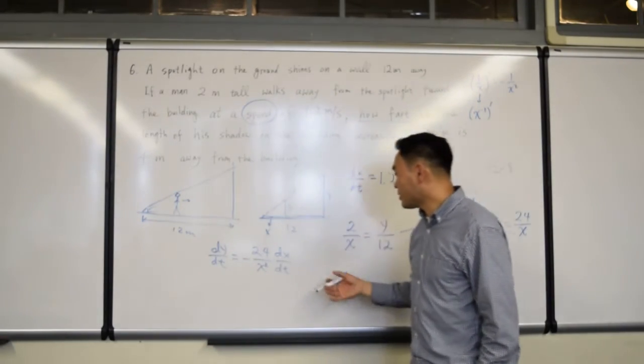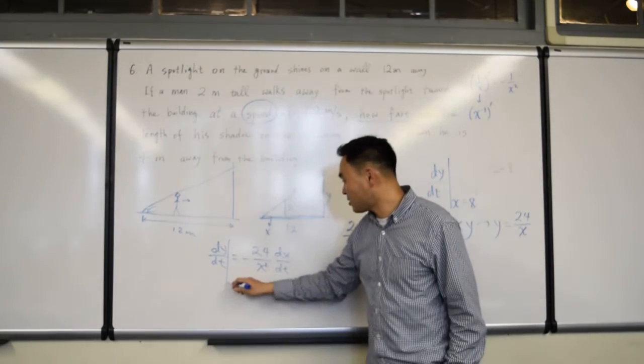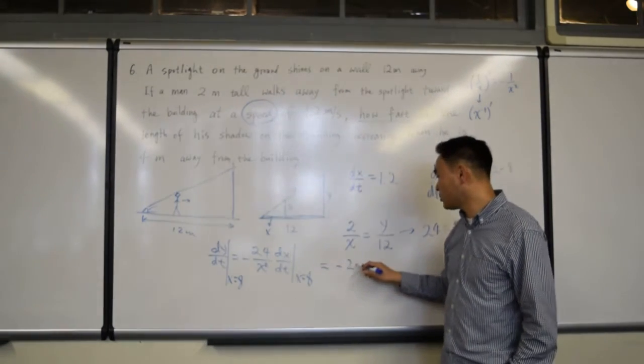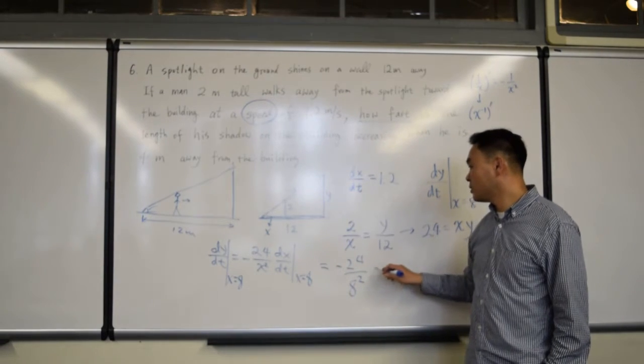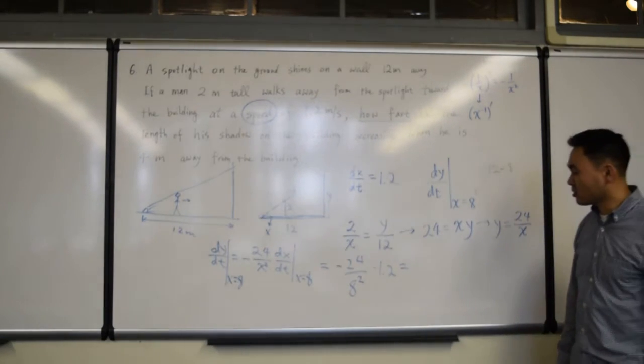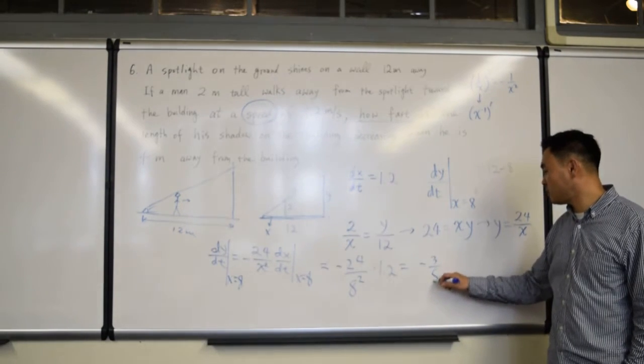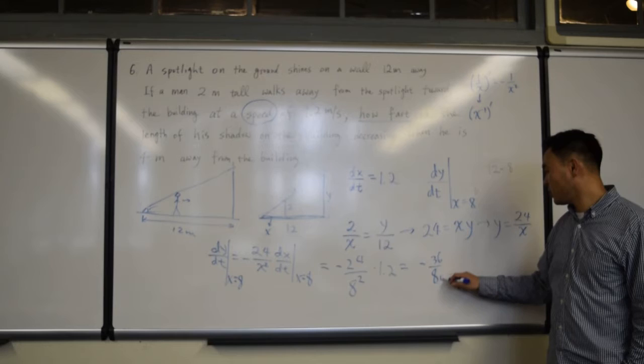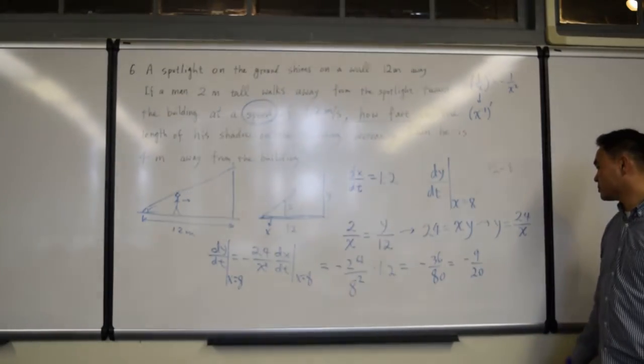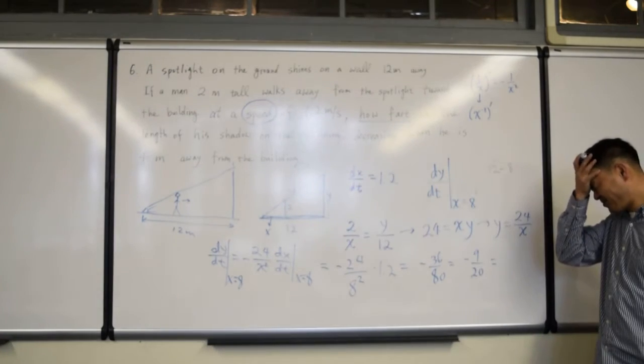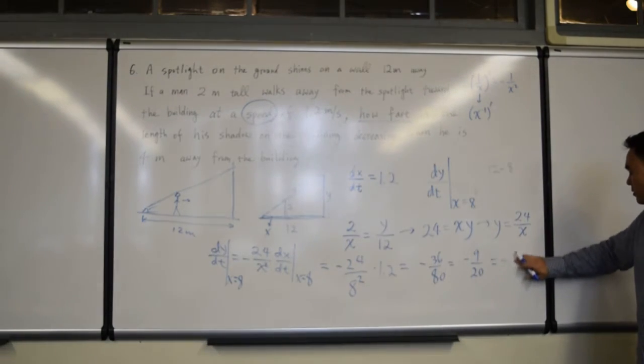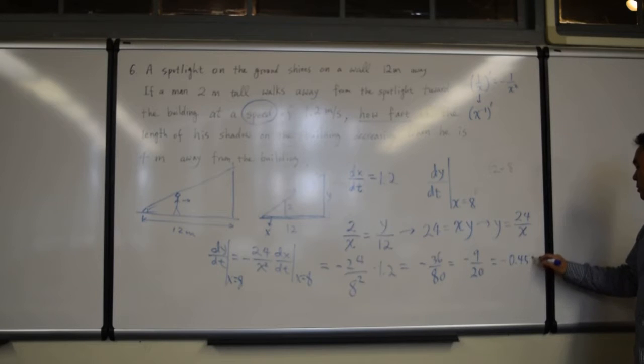Alright, so, this is what we get. Now, we can just plug in and get the answer, right? x equals to 8, so x equals to 8, and therefore, negative 24 over 8 squared. dx/dt is 1.2, and whatever that is, that's your answer. Let's see. It's negative 3 over 8. Okay. 36 over 80. That's 9 over 20.